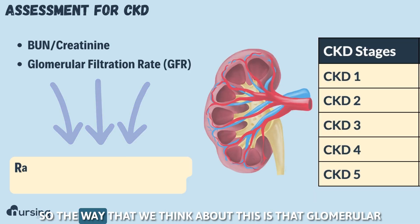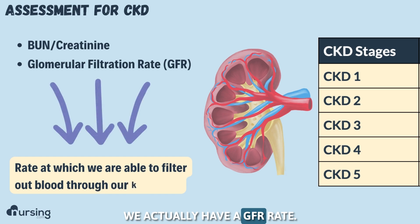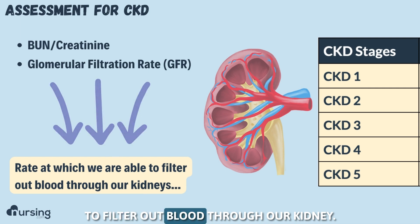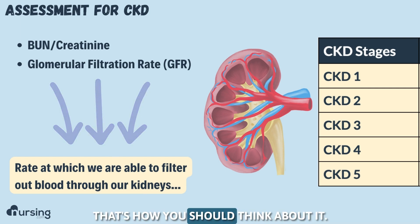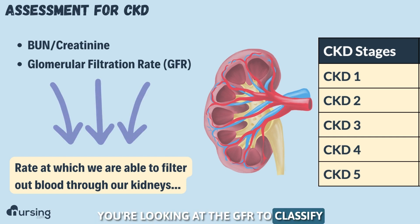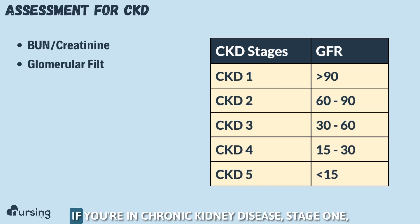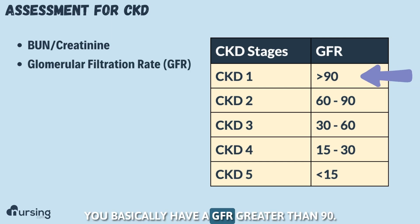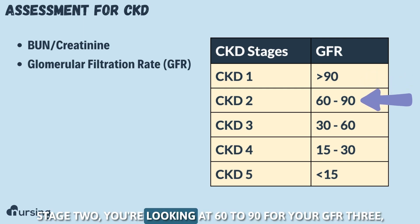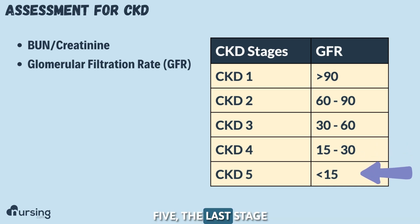GFR — glomerular filtration rate — is the actual rate at which we are able to filter blood through our kidney. Chronic kidney disease is broken up into five stages classified by GFR. Stage one: GFR greater than 90. Stage two: 60 to 90. Stage three: 30 to 60. Stage four: 15 to 30. Stage five, the last stage: GFR less than 15.